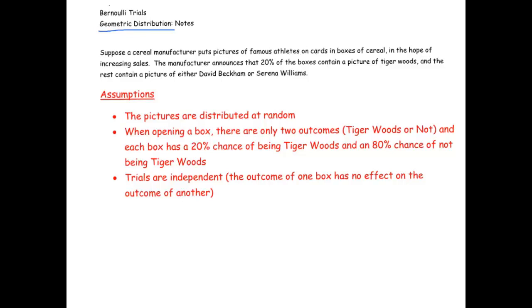Now let's just talk about some assumptions that are made that are implicit in this type of problem. The first is that the pictures are distributed at random. The second is that when you open a box there are only two outcomes, so that's very important. There are only two outcomes, in this case Tiger Woods or not. Each box you open has a 20% chance of being a Tiger Woods card. And then the last assumption we need to make is that the trials are independent, meaning each box you open, whatever you get has no effect on what you're going to get when you open the next box.